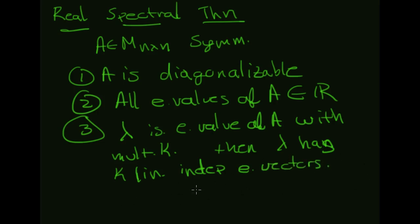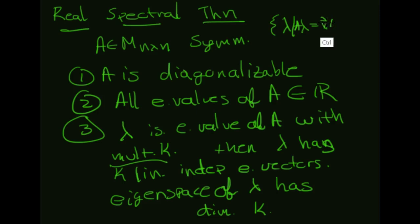So this is telling me that the eigenspace of lambda has dimension k. Lambda has a full set of eigenvectors that are linearly independent according to its multiplicity. A key note here is that the set of all eigenvalues of A is called the spectrum. So this is where this title spectral theorem comes from.